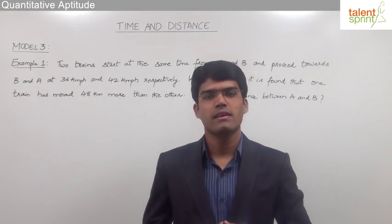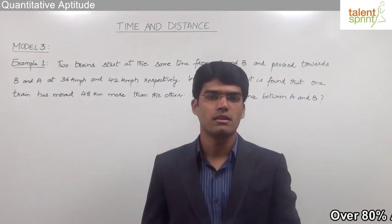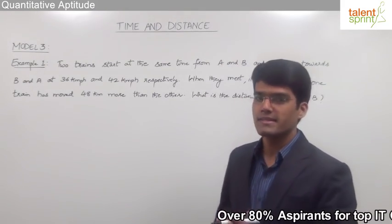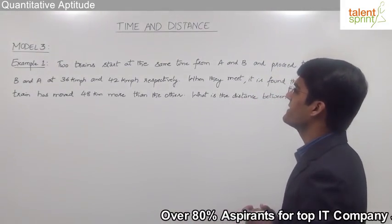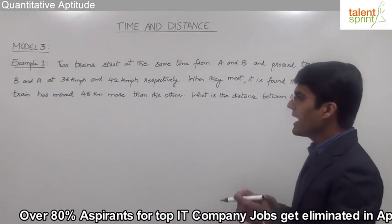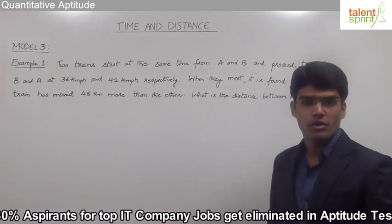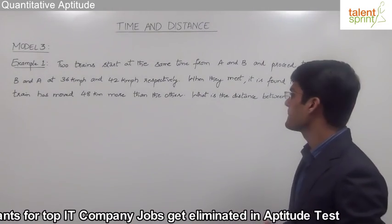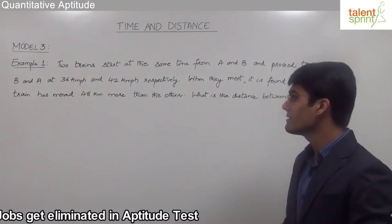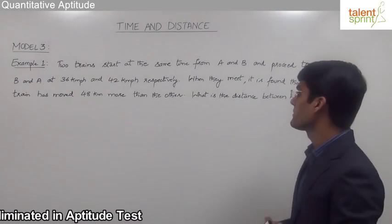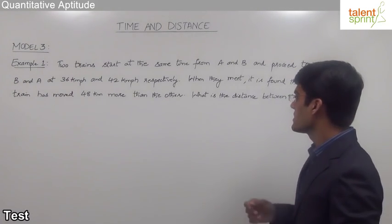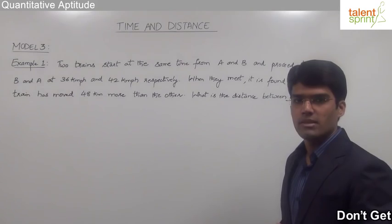Let us now take the third module from Time and Distance, where generally we can solve the question by equating the time in two different cases. Let us look at example one. Two trains start at the same time from A and B and proceed towards B and A at 36 km per hour and 42 km per hour respectively. When they meet, it is found that one train has moved 48 km more than the other. What is the distance between A and B?